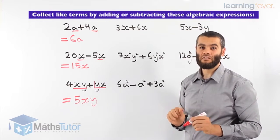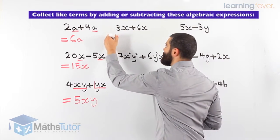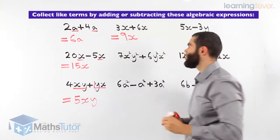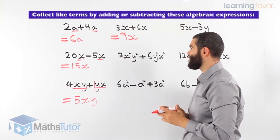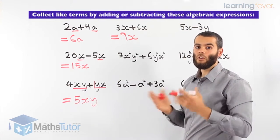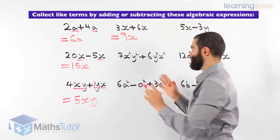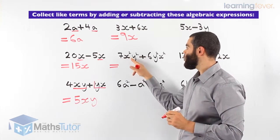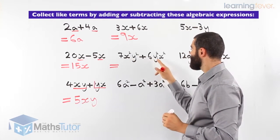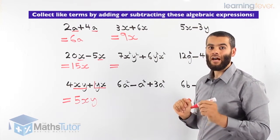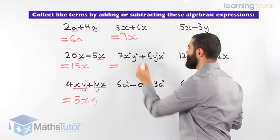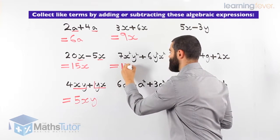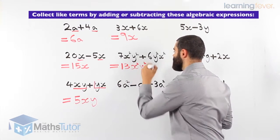3x plus 6x — are they like terms? Yes, they are. 3 plus 6 equals 9x. It's like saying we have 3 x's on one side and 6 x's on another side; altogether we have 9x's. Next: 7x squared y squared plus 6y squared x squared. We have x squared and x squared — yes. Y squared and y squared — yes. That means we can add 7 and 6, giving 13x squared y squared.